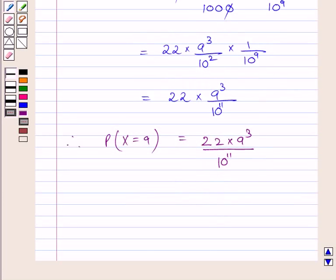Therefore, the probability that in a random sample of 12 articles, 9 are defective is 22 multiplied by 9 cubed upon 10 raised to the power 11. This is our required answer. This completes the session. Hope you understood the solution. Take care and have a nice day.